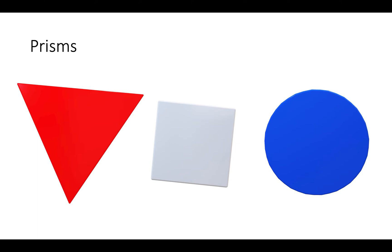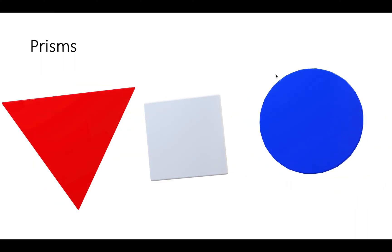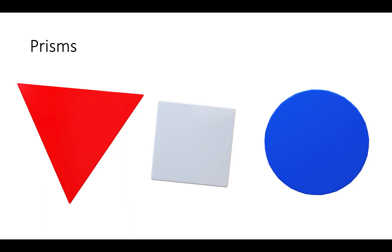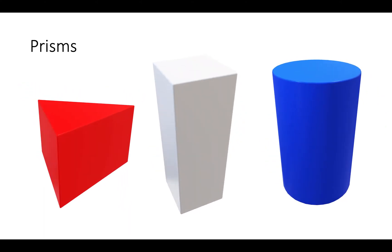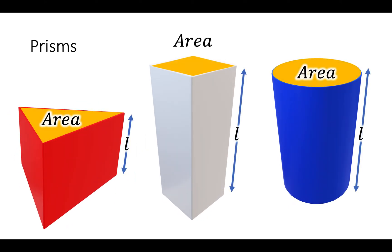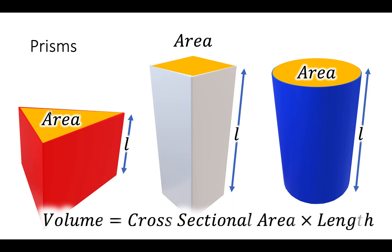Now let's look at prisms. Prisms are 2D shapes that are stretched. Here I've got a triangle, a square, and a circle, and I stretch them. So they look like this. The rule for the volume of these is we work out the area of the top and then multiply it by the length. We call this area on top the cross-sectional area.